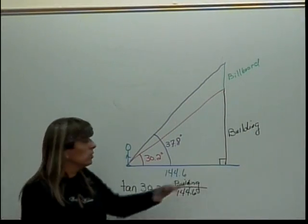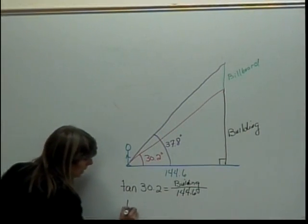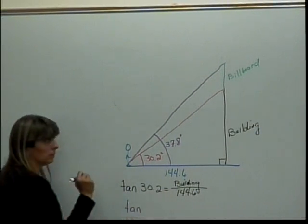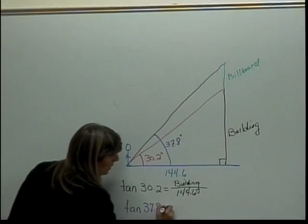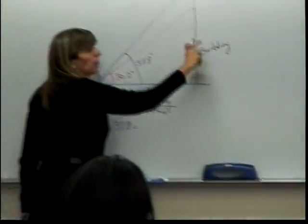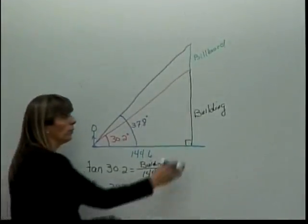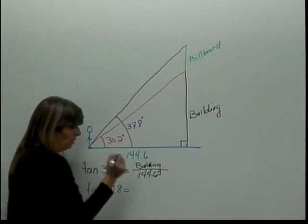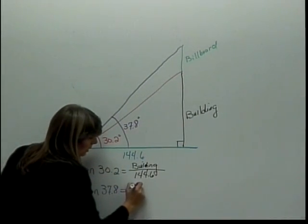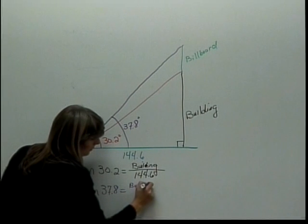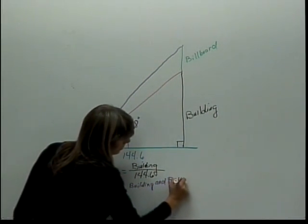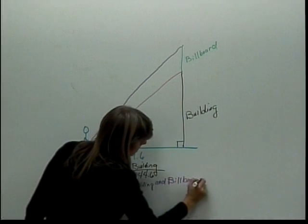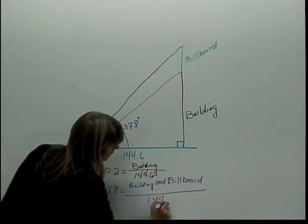So I could use the tangent again. The tangent here would be of what? Of the 37.8, and that's equal to what are the green and the black pieces together? Well, they're the building and the billboard, right? So whatever the building and billboard are, over the 144.6.